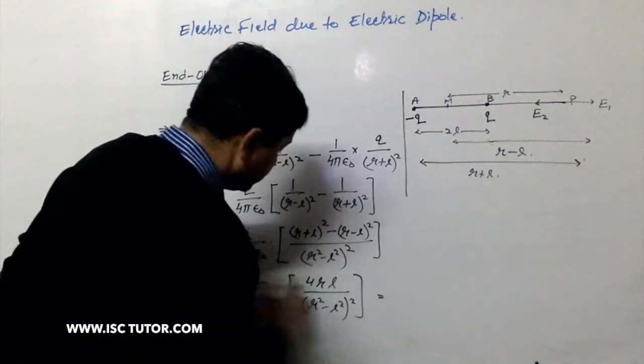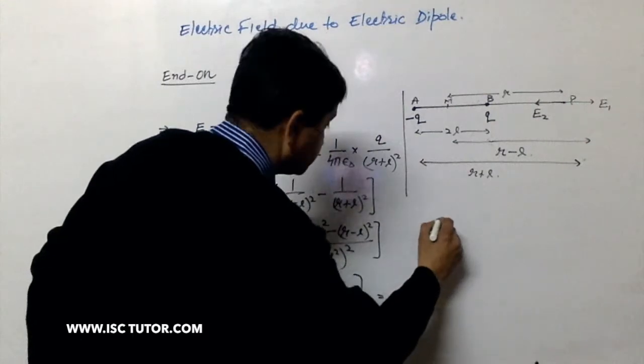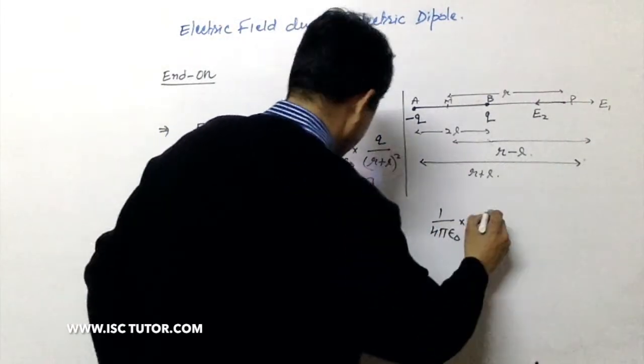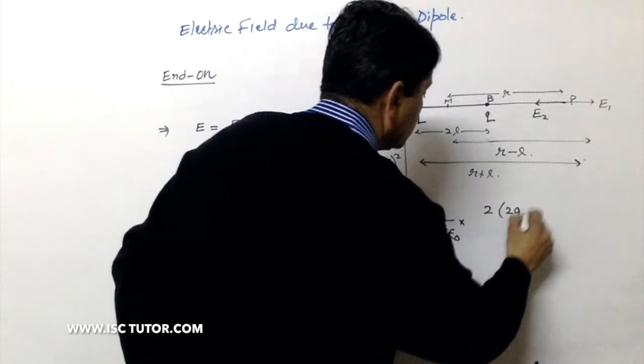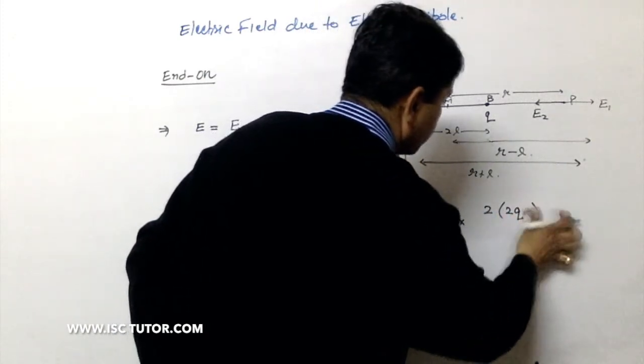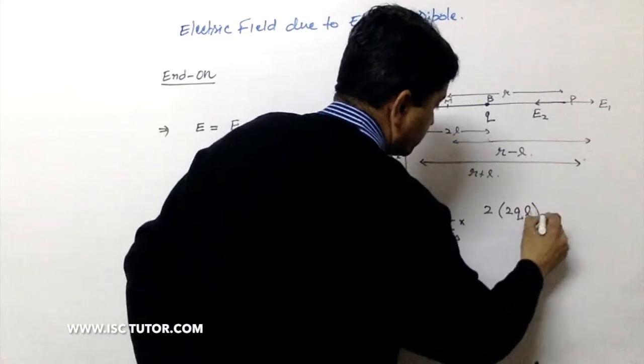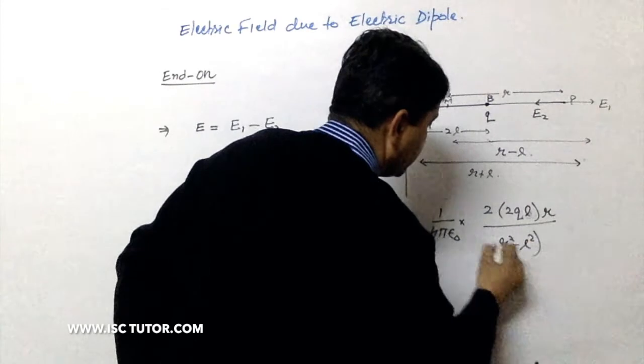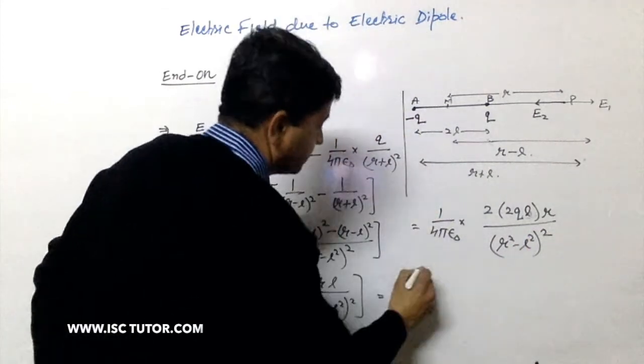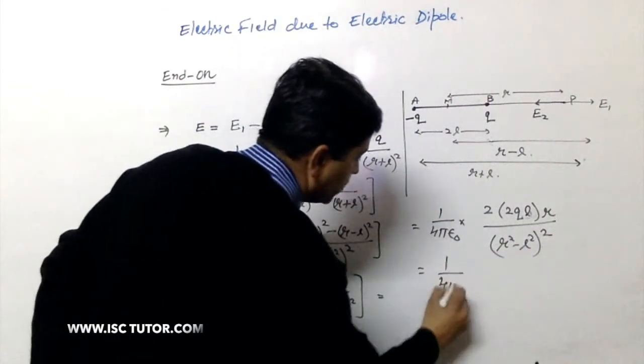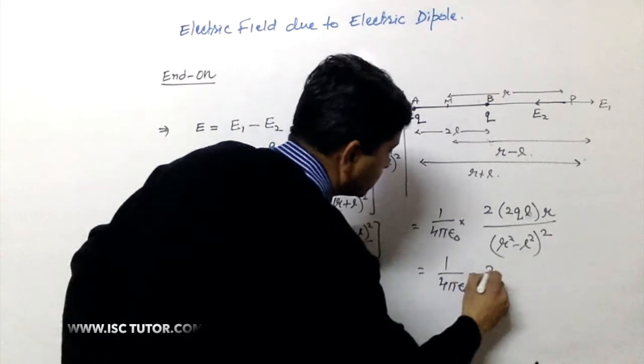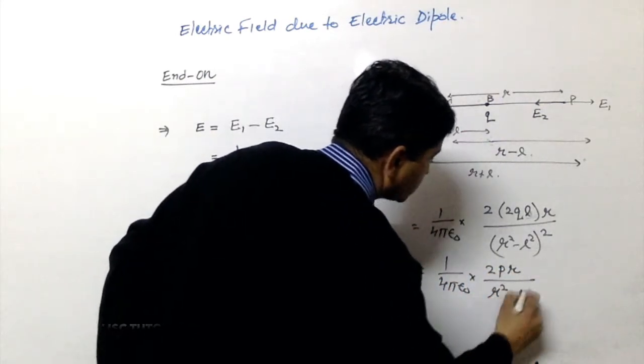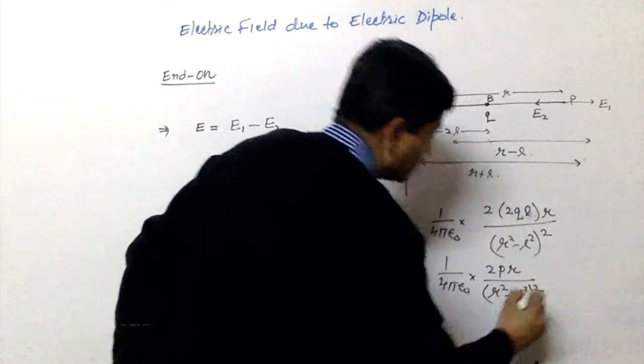We can readjust this statement as 1 upon 4 pi epsilon 0 multiplied by R times L multiplied by R upon R square minus L whole square. So this becomes 1 upon 4 pi epsilon 0, 2 P r upon R square minus L whole square.